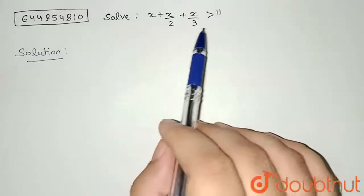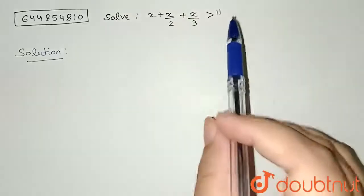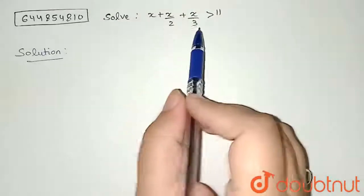x plus x by 2 plus x by 3 greater than 11. So we are told to find the solution of this inequality in the question. So first of all, let's